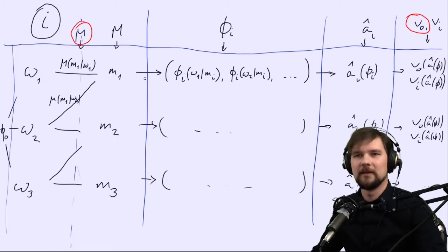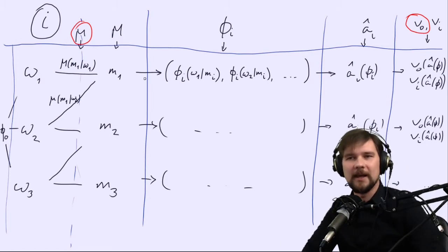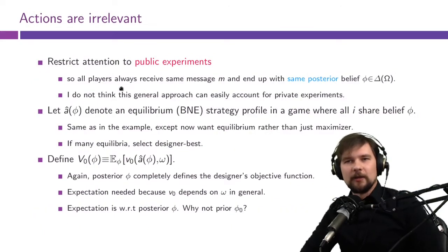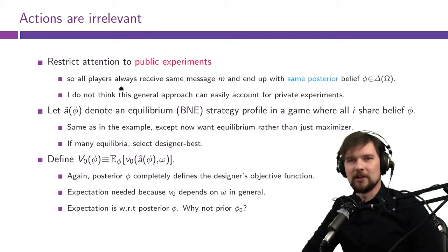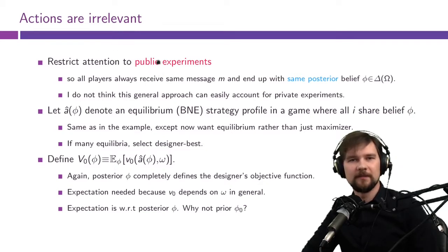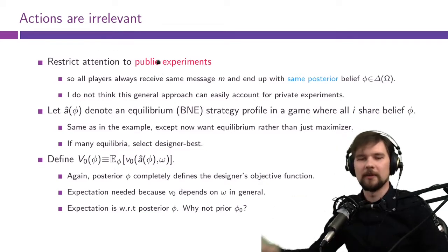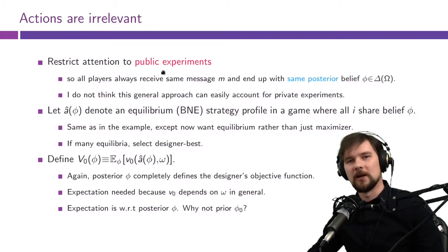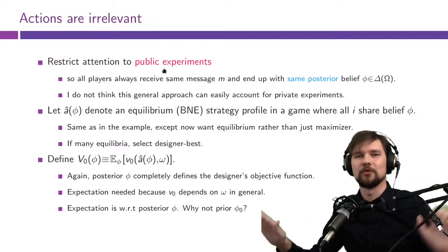So this is something that we can do — we can eliminate a couple of the middle steps as follows. For this first general approach, we will restrict our attention to public experiments. We will not talk about private experiments whatsoever. We will say that even if we have many players, all of them must receive the same message. So this is some institutional restriction.